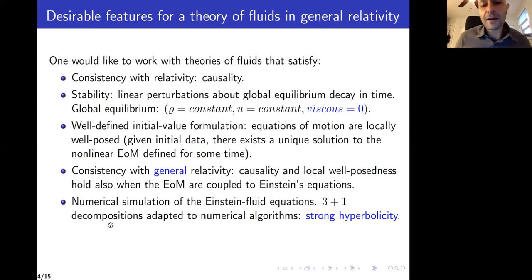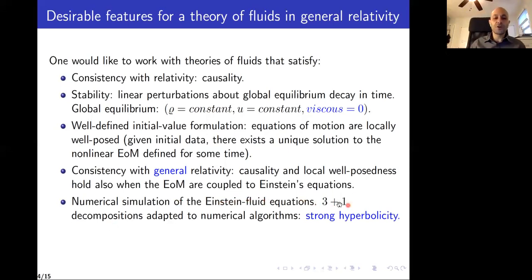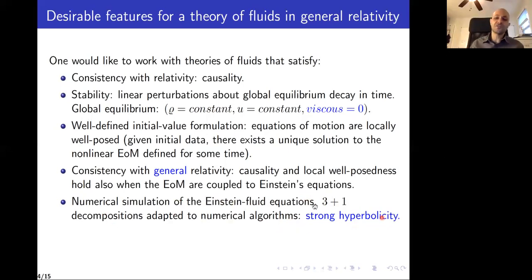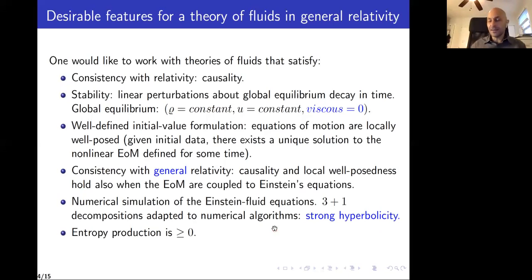When it comes to numerically simulating Einstein equations coupled to matter — in our case the Einstein fluid equations — we want a good three-plus-one decomposition adapted to the numerical schemes used in numerical relativity. One key property that helps ensure this is strong hyperbolicity: you would like the equations of motion to be strongly hyperbolic. Finally, there is a thermodynamic requirement: we would like entropy production to be non-negative.